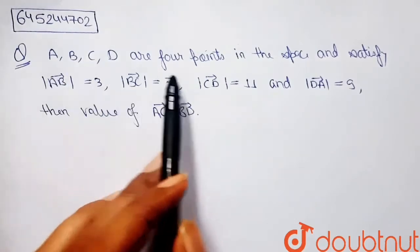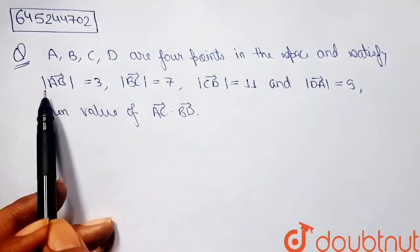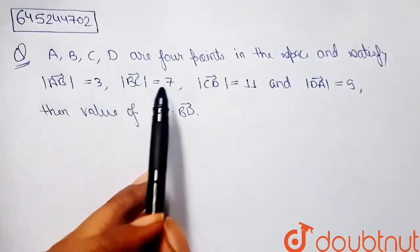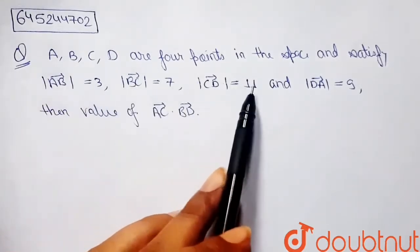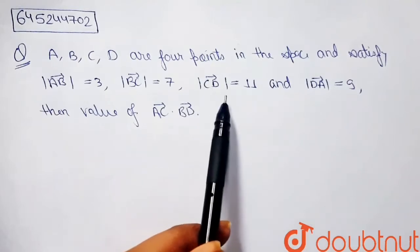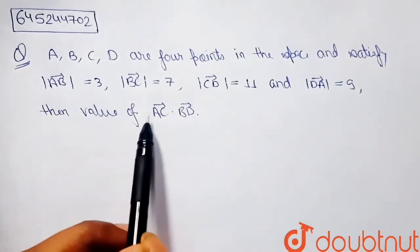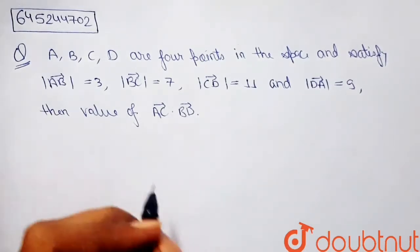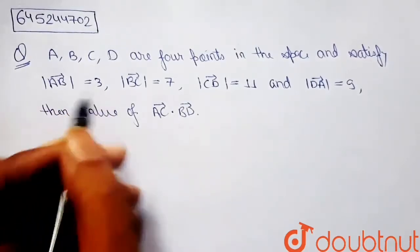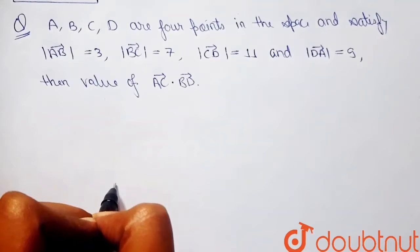It says that ABCD are four points in space and satisfy: mod of AB equals 3, mod of BC equals 7, mod of CD equals 11, and mod of DA equals 9. Here mod basically means the magnitude. We have to find the value of AC dot BD.